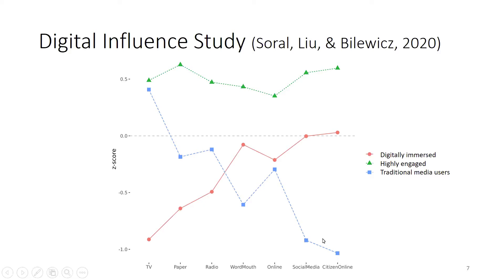The blue line represents traditional media users — more often older people who watch a lot of TV, read newspapers, and listen to radio, but are not using social media or citizen journalism as sources of information. The red line represents digitally immersed users who are not watching TV, not reading newspapers, not listening to radio — most of their information comes from online journalism and social media.